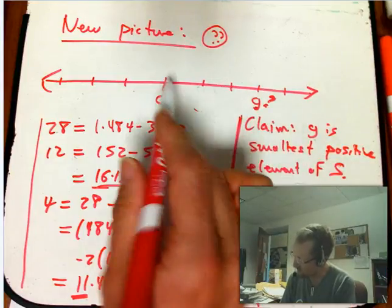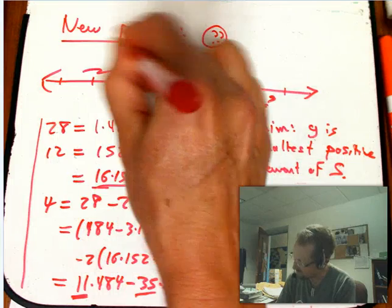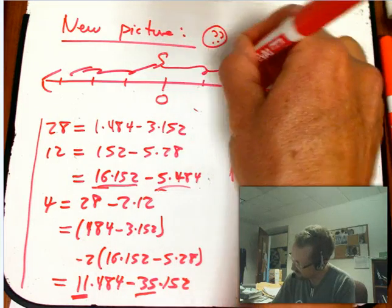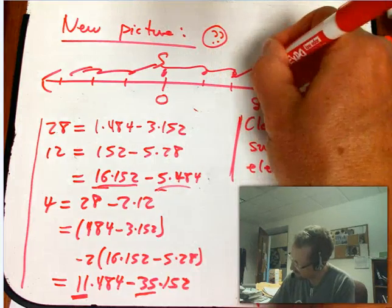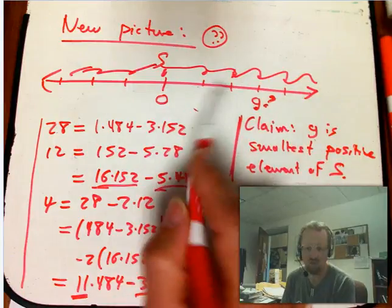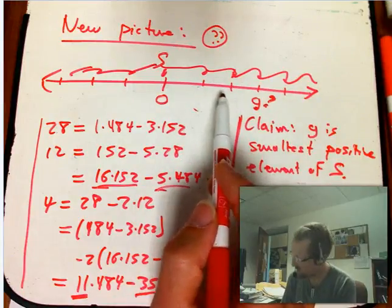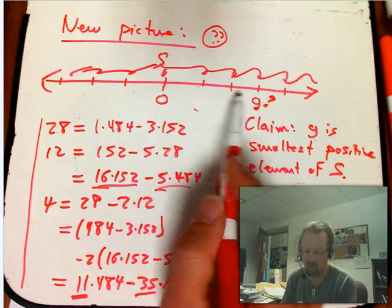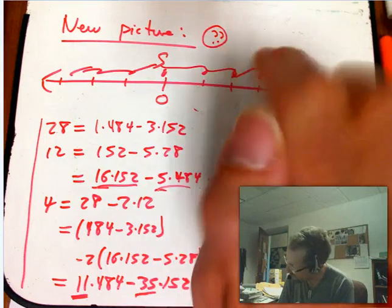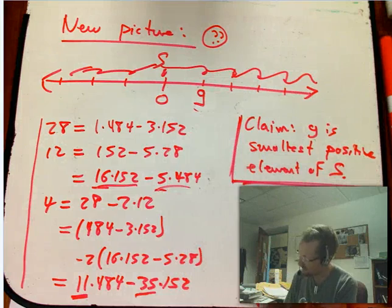And the thing is, suppose G was up here. G, remember, is supposed to divide into everything in S. So S is all these guys, well, including 0. If G is going to divide into them, then I can't have anything small or positive in here. Because this would be like a half G, or a third G, or two sevenths G, or something like that. So G actually has to be the smallest positive element of S.